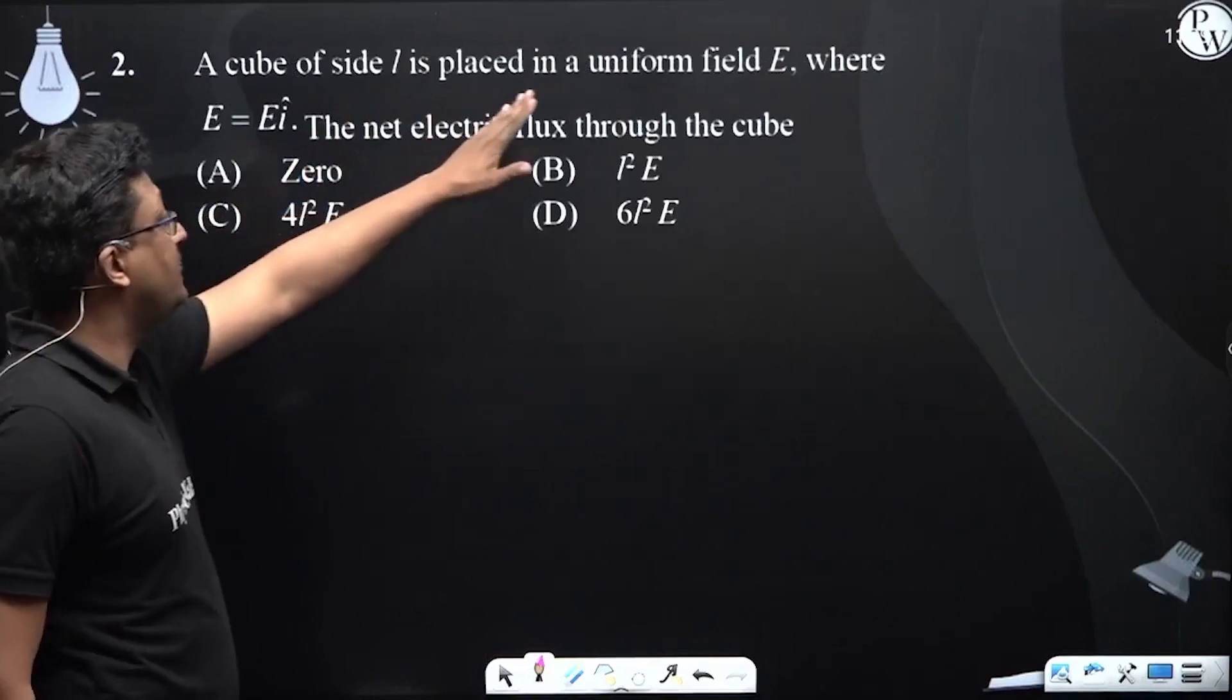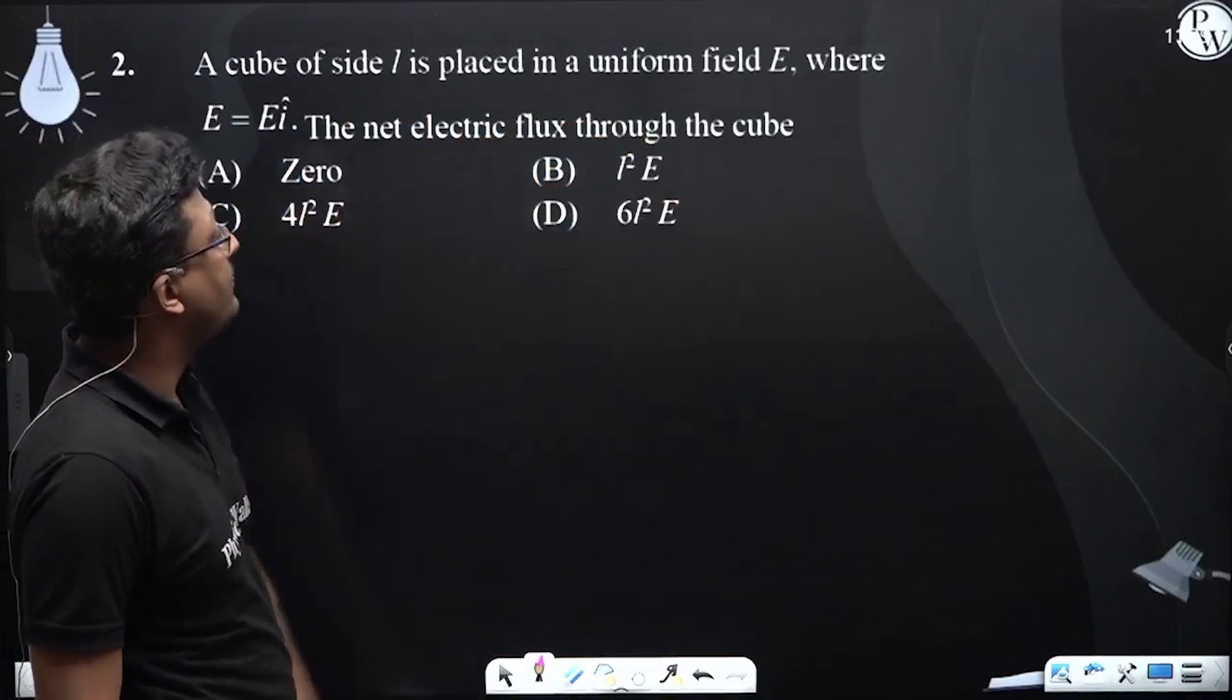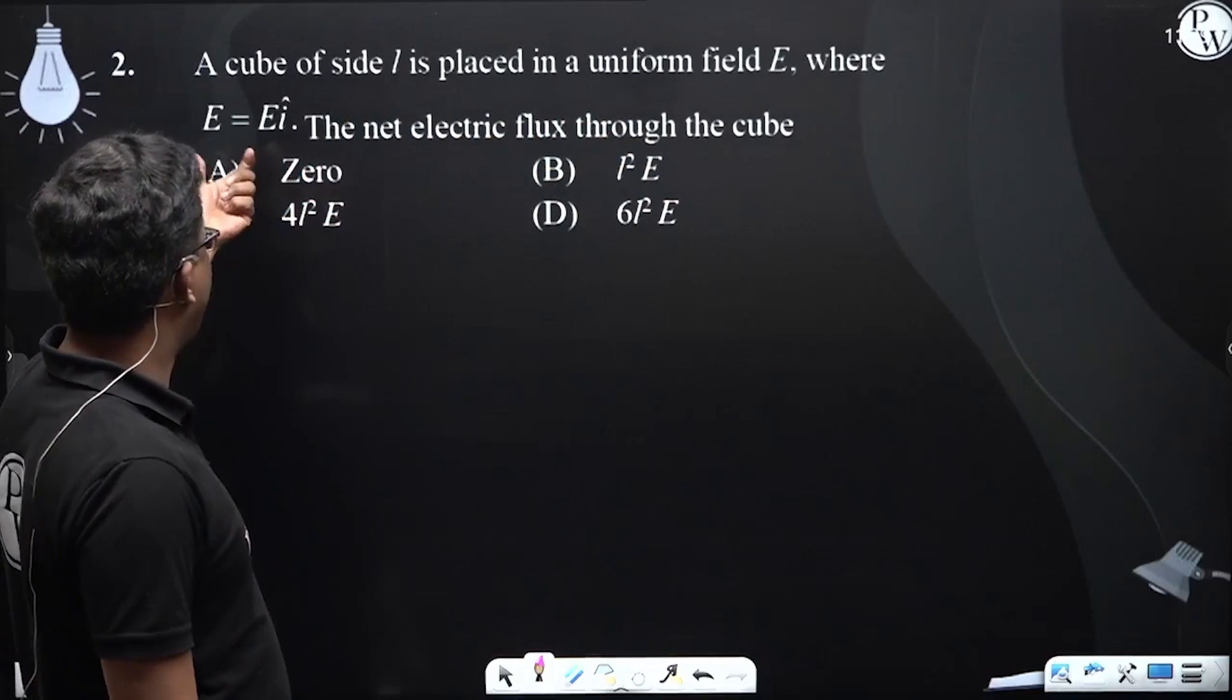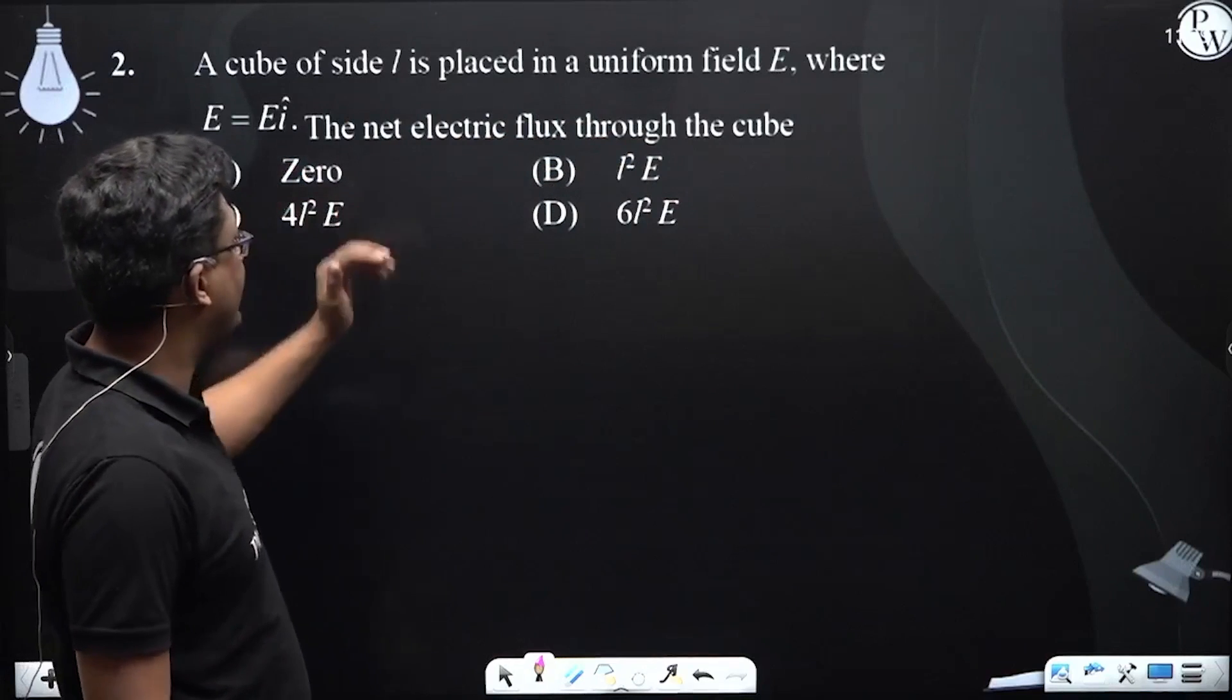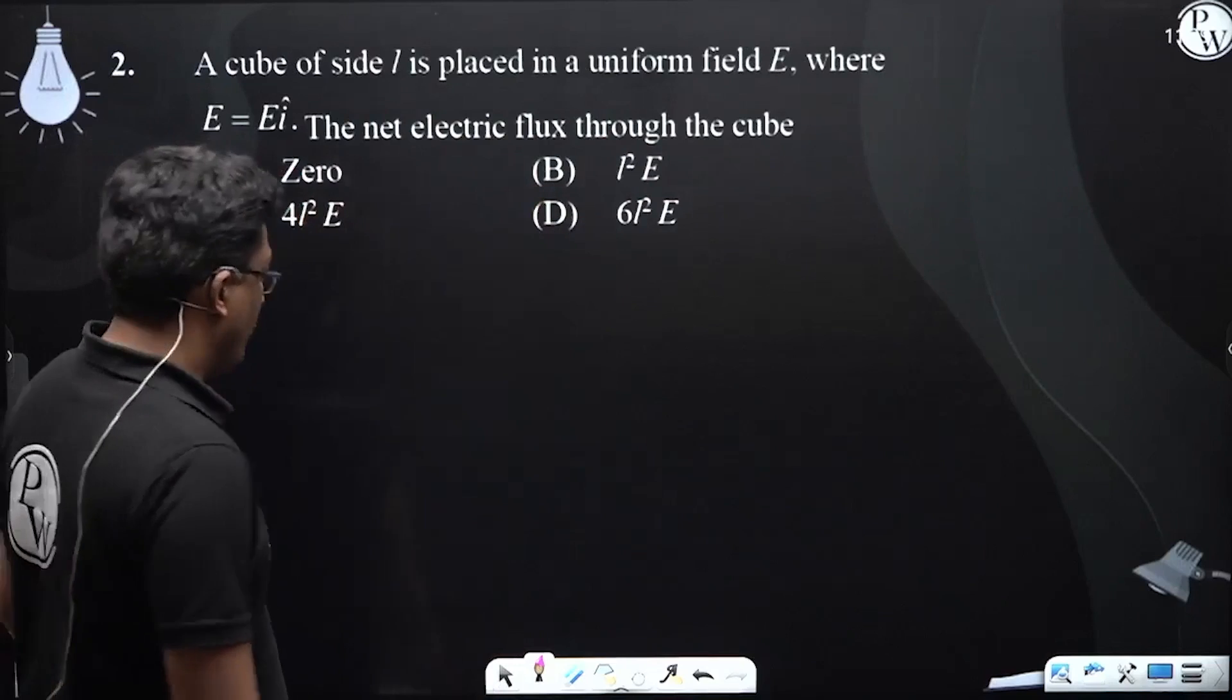A cube of side L is placed in a uniform field where the electric field is directed along the positive x-axis. The net flux through the cube.